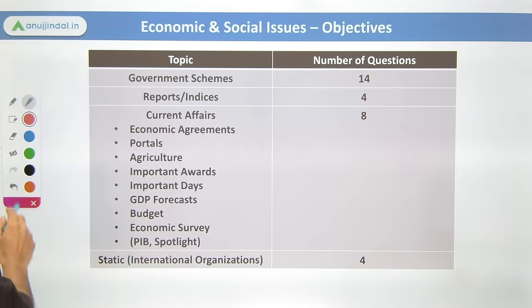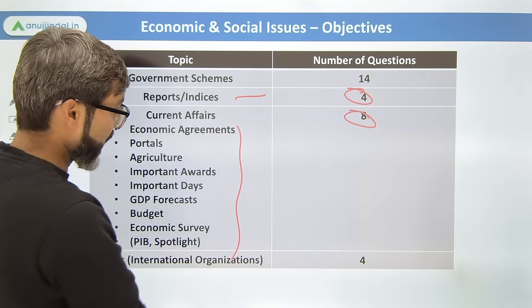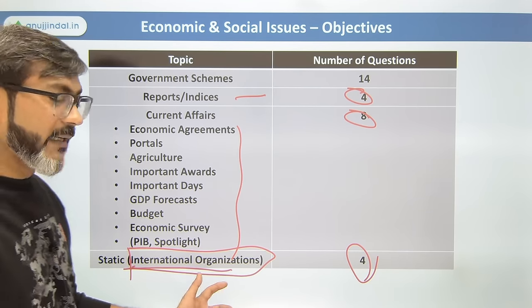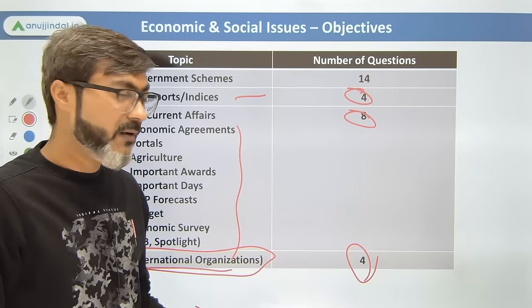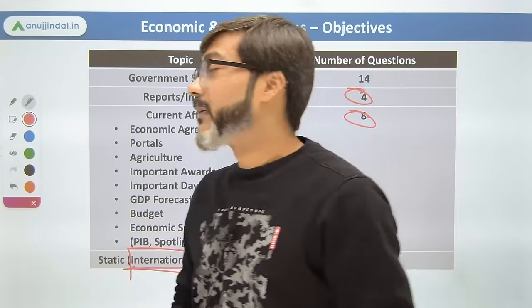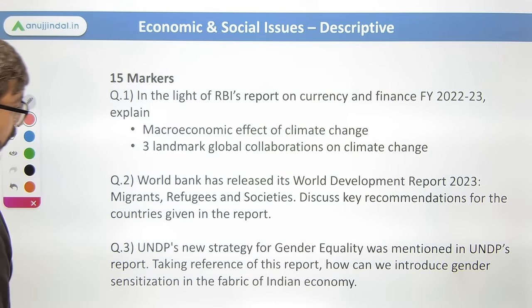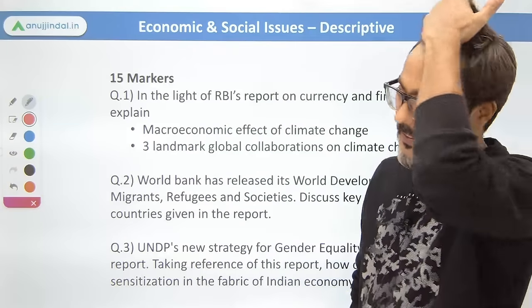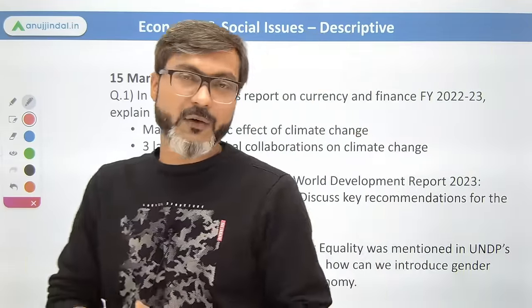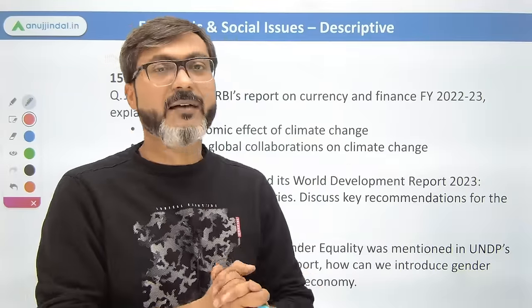Now for 2023 — again, government schemes dominated ESI objective. The descriptive part was quite difficult because in the 15-marker section, two or three questions were from reports. Writing descriptive answers referencing specific reports is very challenging as one cannot remember all the details. But since they have asked from reports, we must practice descriptive questions based on reports and government schemes.